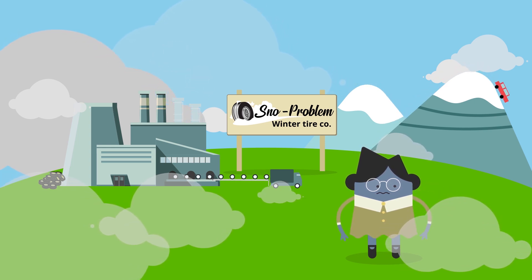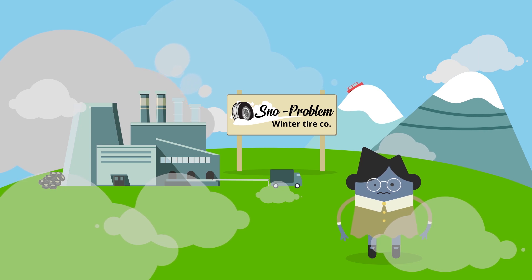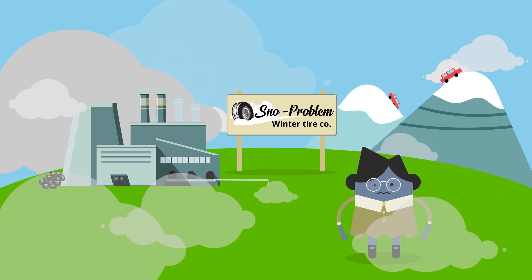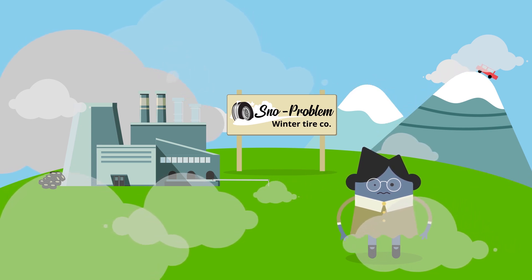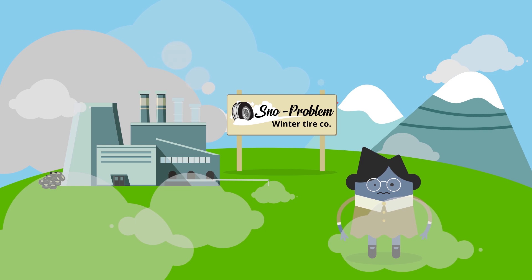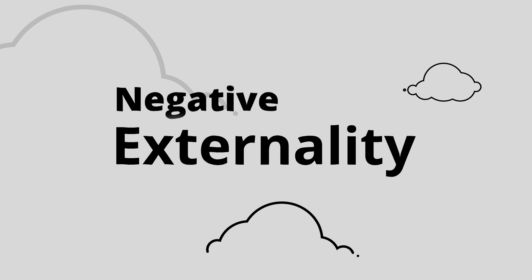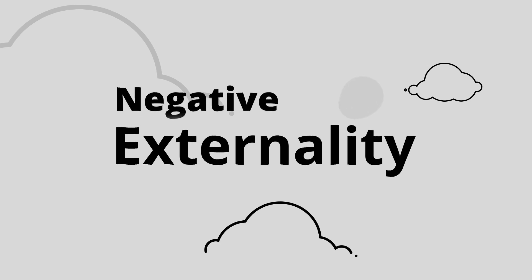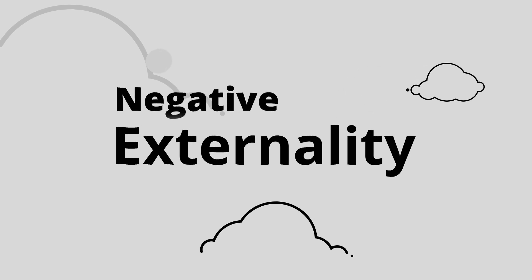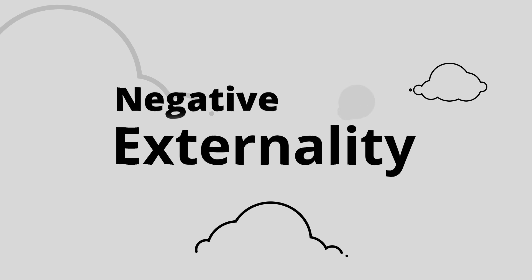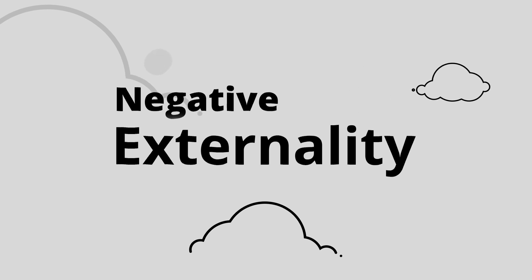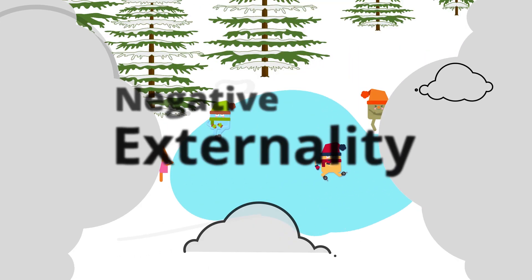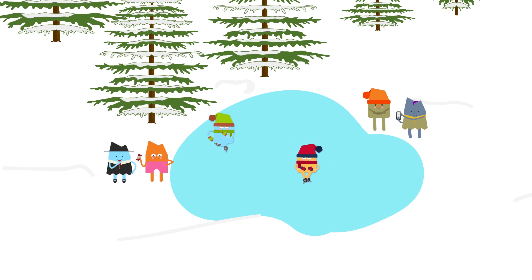Neither do the people who use those tires. Polluted air presents a health risk and a cost to anyone who breathes it in. In this example, that's our externality, and it's a negative one. Pollution is an additional cost that comes with producing the product but which is not reflected in the price paid by the buyer.